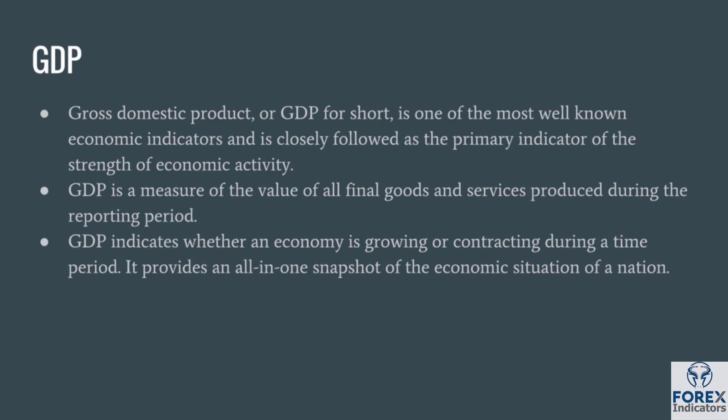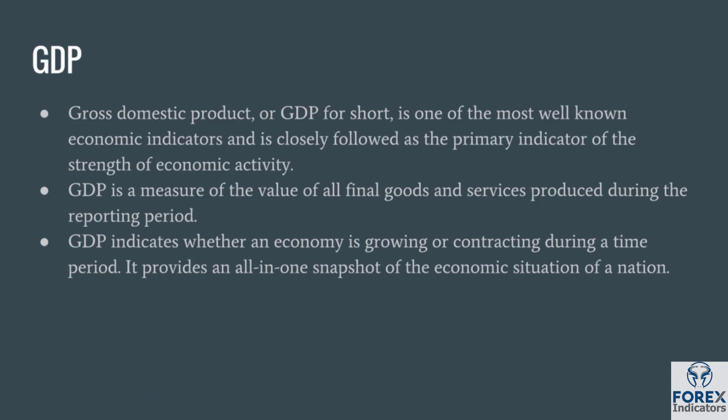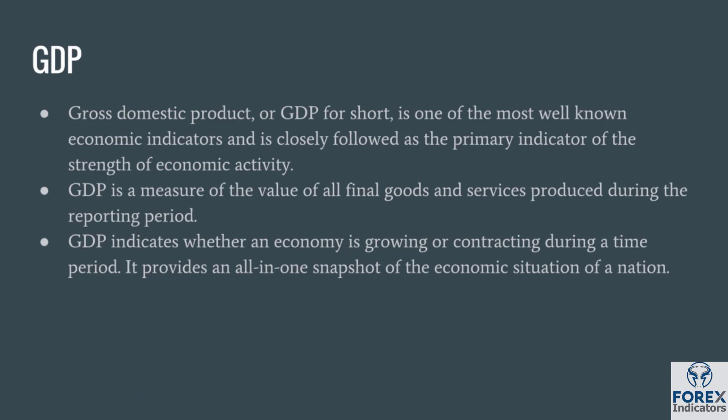GDP is a measure of the value of all final goods and services produced during a reporting period. GDP is the sum of the value of all cars, car washes, TVs, computers, computer repair services, books, t-shirts, etc. GDP reflects the final value of all output in the U.S., whether a good or service was sold or placed in inventory — items that have not been sold are still included because they were still assembled. GDP is essentially a measure of a country's overall economic activity, which can infer a country's economic state, and it provides an all-in-one snapshot of the economic situation of a nation.